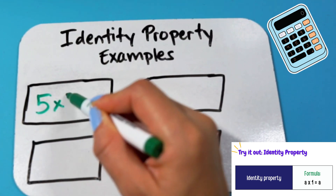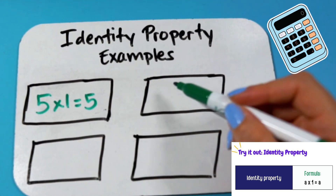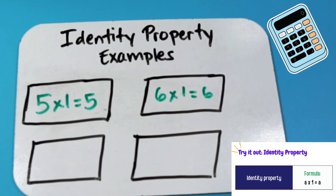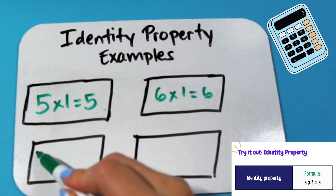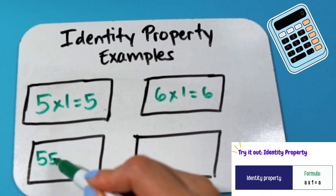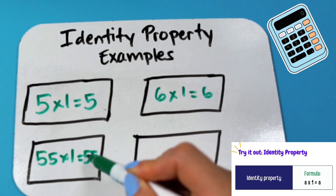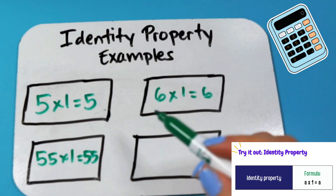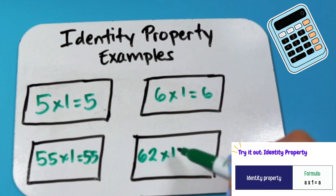Utilizing our first set of numbers: five times one, which we know is equal to five. Six times one is equal to six. Fifty-five times one is equal to fifty-five. Sixty-two times one is equal to sixty-two.